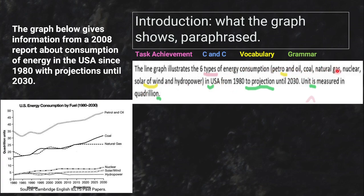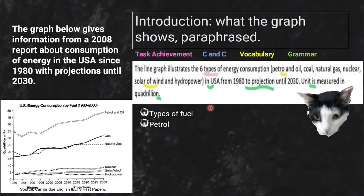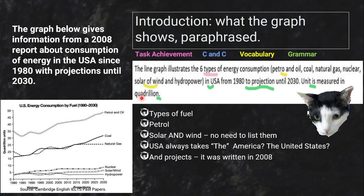You really don't need to list all the fuel types. And don't misspell words from the graph. The USA always takes 'the.' You should note: 'in the USA, from 1980, with projections to...' — there are multiple units, measured in quadrillions. In this case we use quadrillions.